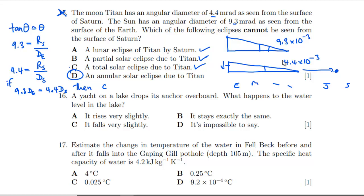Question 16: A yacht on a lake drops its anchor overboard. What happens to the water level in the lake? When the anchor is on the yacht, it's going to displace water which has got a volume of water with the same mass as the anchor. That's a big volume of water. When the anchor goes into the water, it displaces a volume of water which is the same as the volume of the anchor. Because the anchor is denser than water, it's going to displace more when it's on the yacht. So the water level will drop when you put it in the water, not by a lot, but it will very slightly fall.